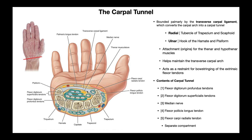Even more lateral is the tendon of flexor pollicis longus — one of the deep muscles of the anterior forearm. It sends its tendon through the carpal tunnel, and ultimately goes to the thumb allowing flexion of the thumb.